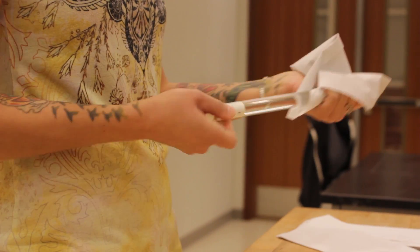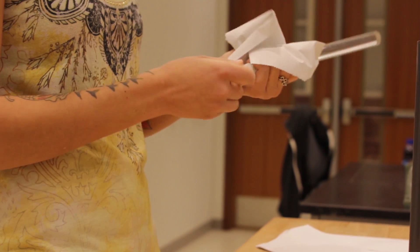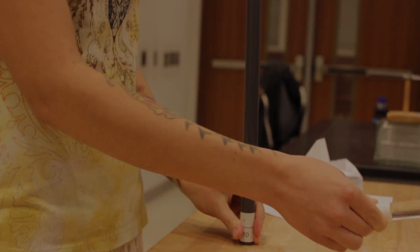When rubbing acrylic with paper, the acrylic becomes positively charged as the paper takes electrons from the acrylic.